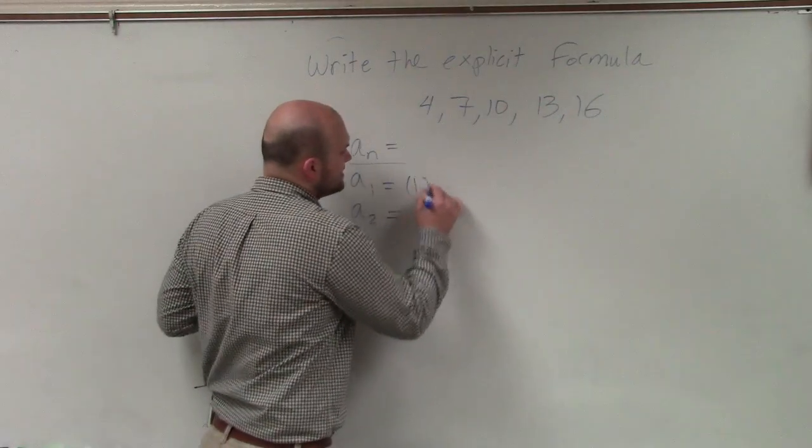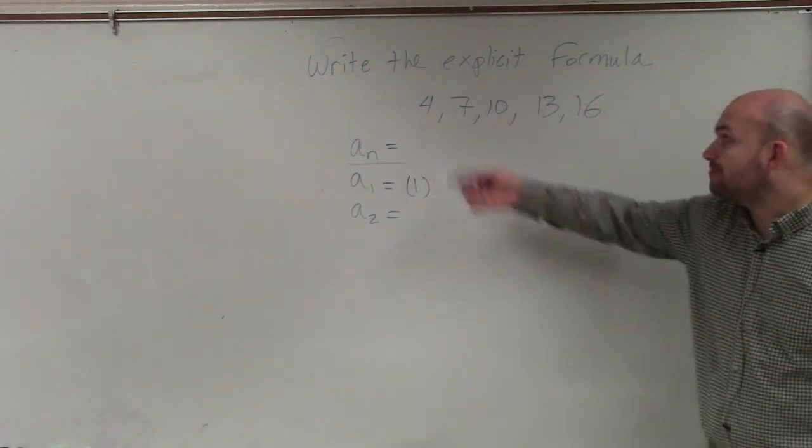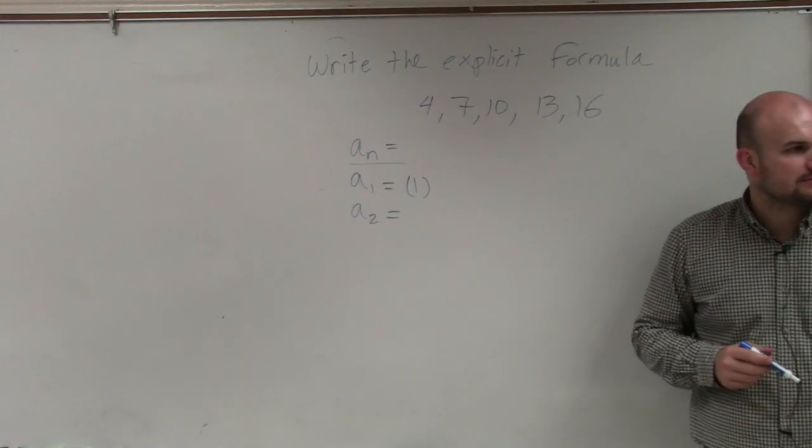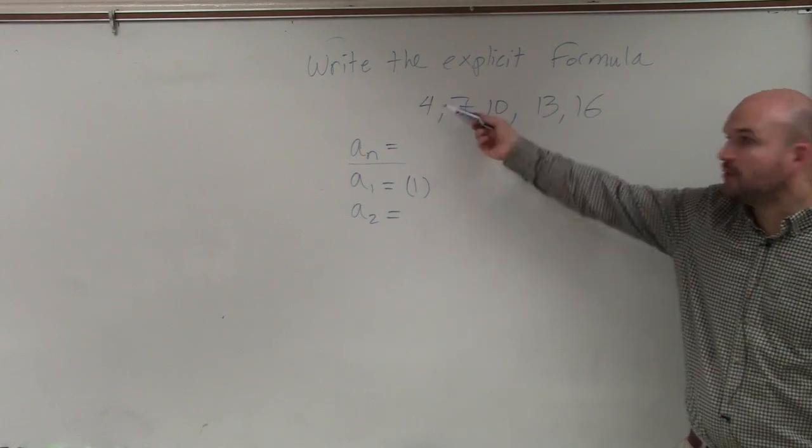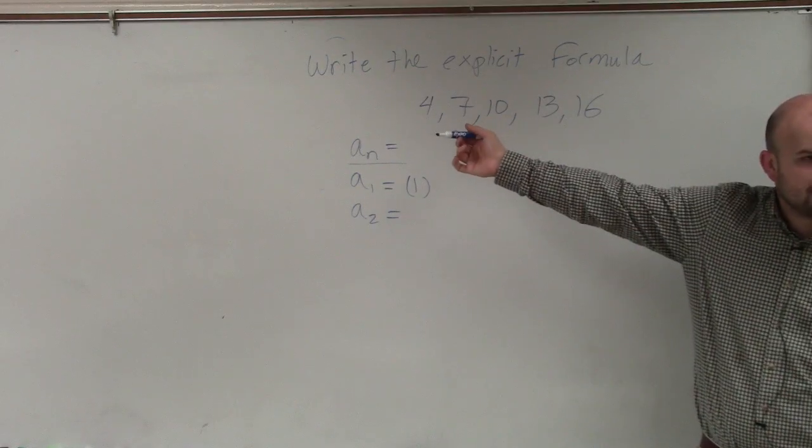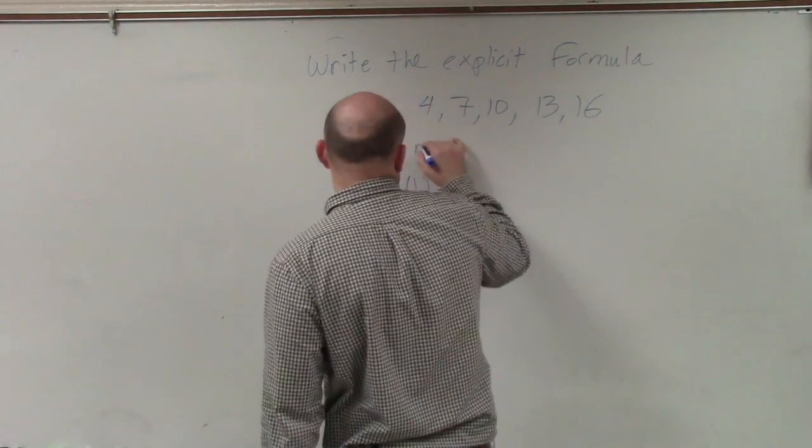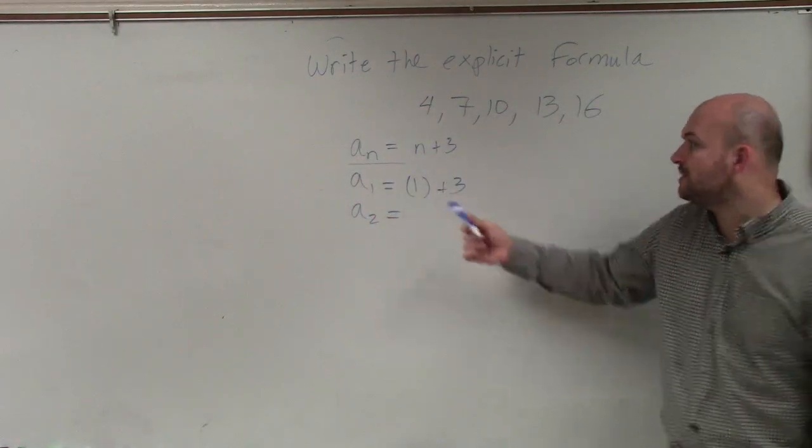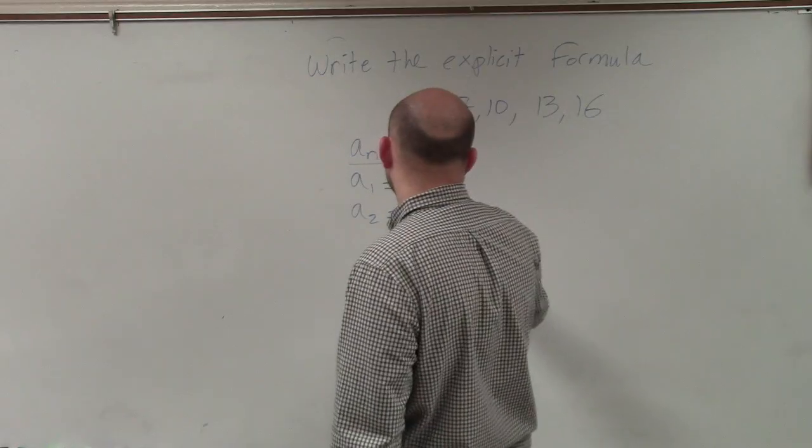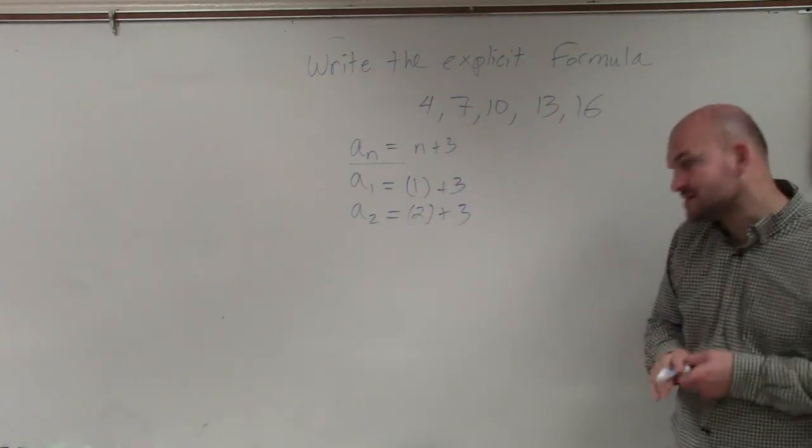Let's pretend n equals 1. Let's do addition first. 1 plus what gives us 4? If I have n as 1, what do I have to do to get to 4? Add 3, right? So it would be n plus 3. That works for n=1, but if I do n=2, does that give me 7? No, so n plus 1 doesn't work.